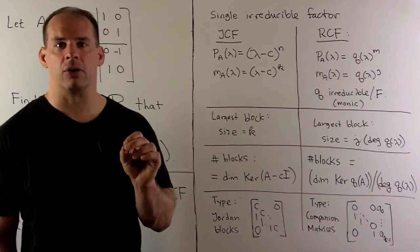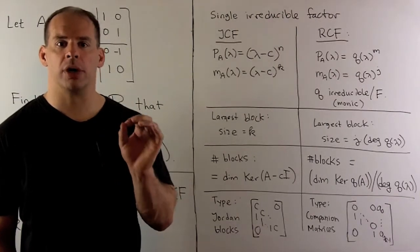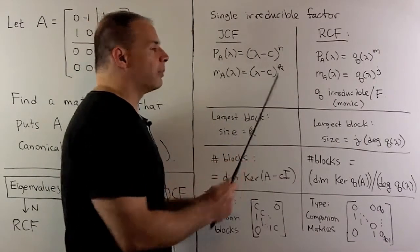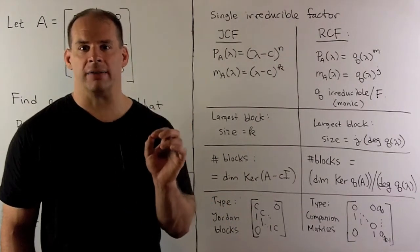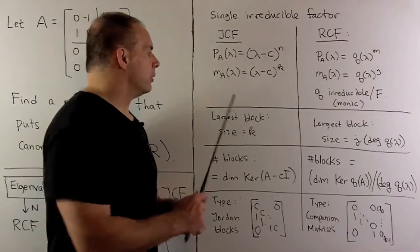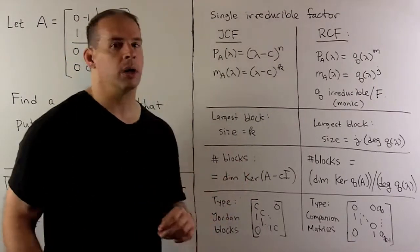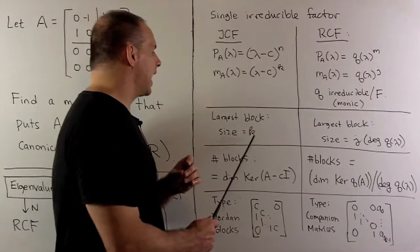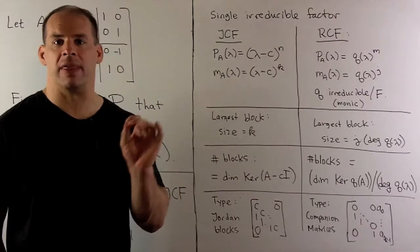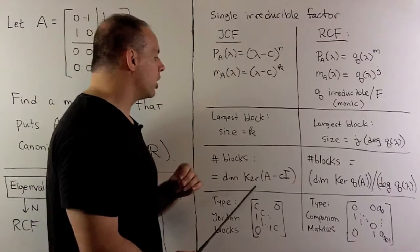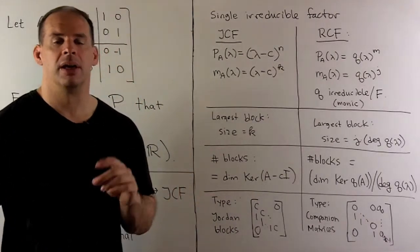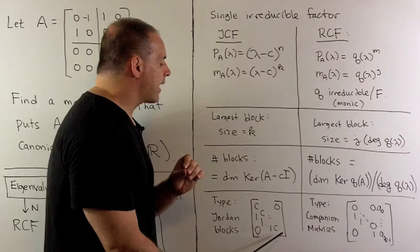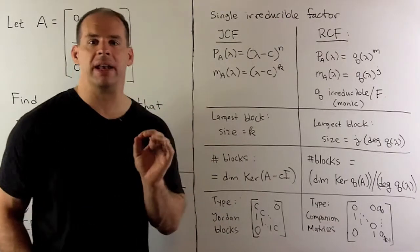It'll be helpful to compare rational canonical form and Jordan canonical form, so we'll review Jordan canonical form first. Here, the characteristic polynomial will be in the form (λ − c)^n, where n is the size of our matrix and c is our eigenvalue. Then the minimal polynomial is going to be equal to (λ − c)^k, where k is less than or equal to n. The size of the largest block we'll use is equal to k.